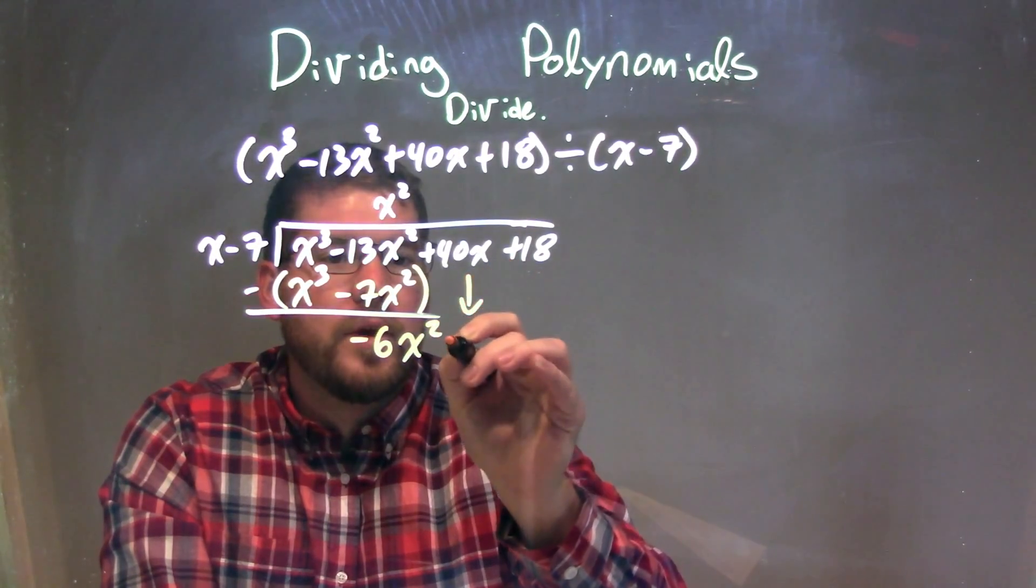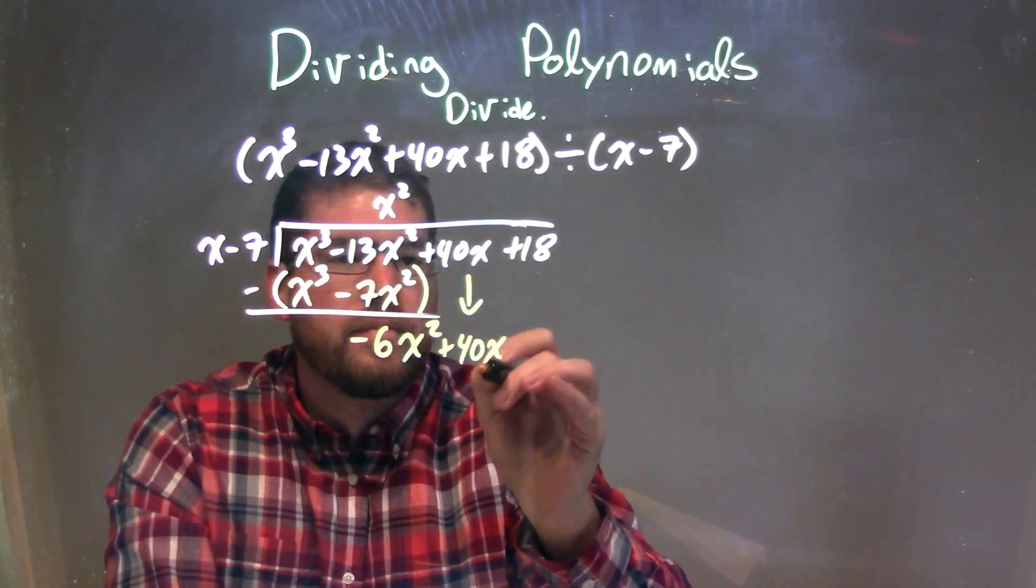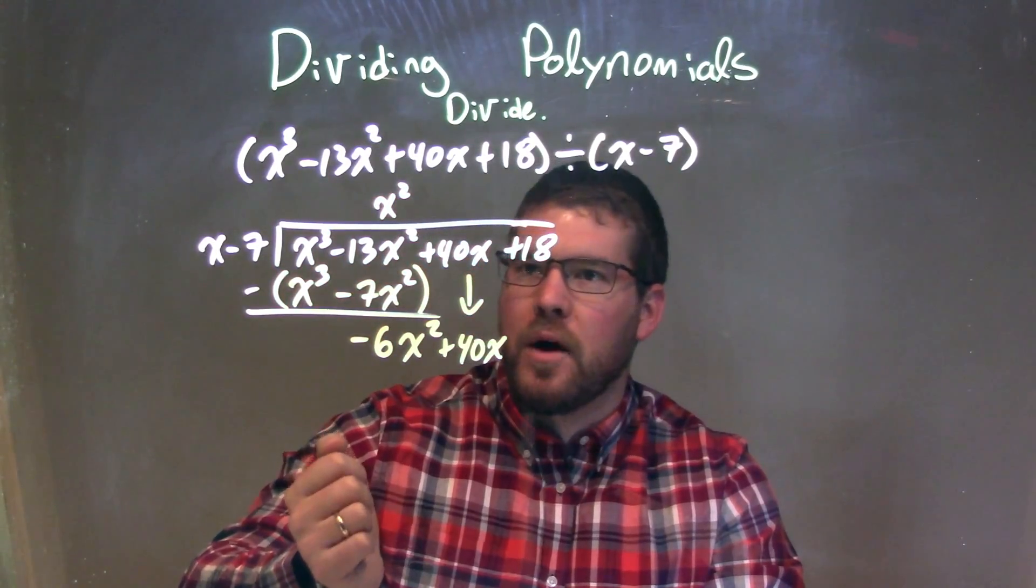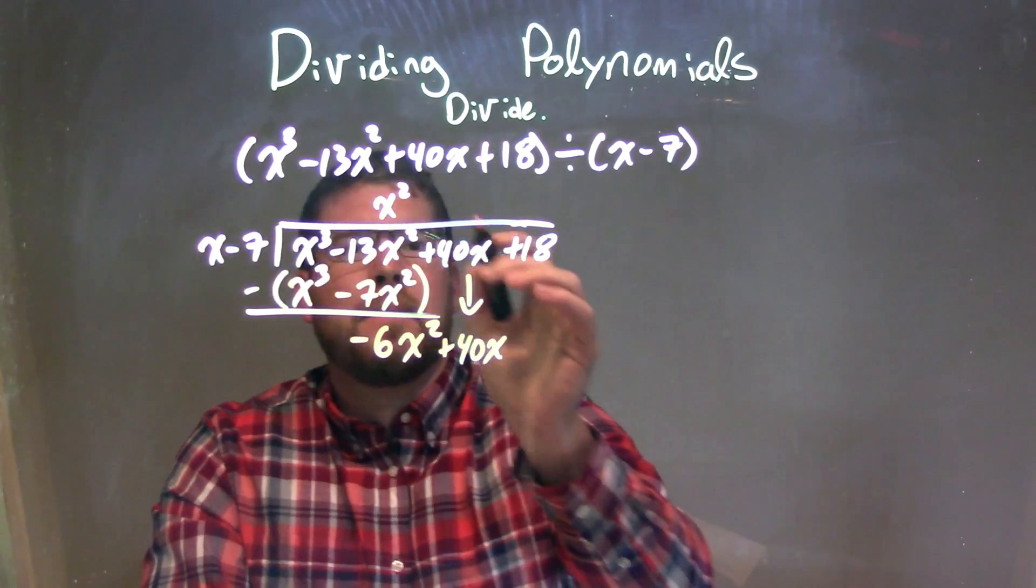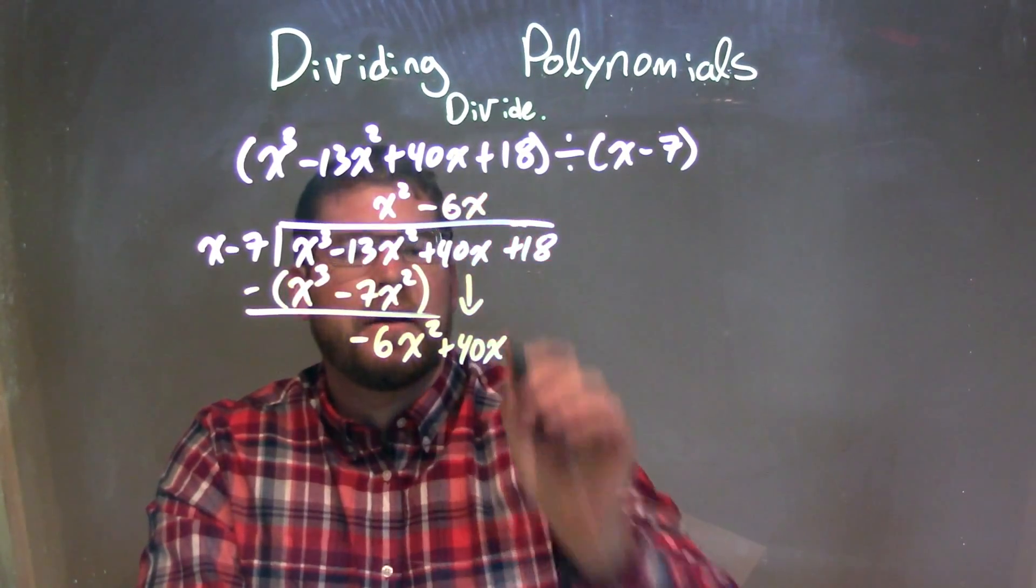Let's bring down 40x, and we ask the same question: what times x gives me a negative 6x squared? And that's a minus 6x.